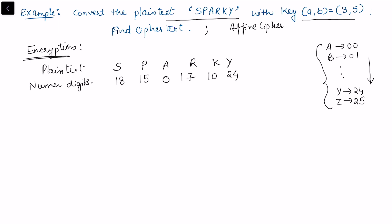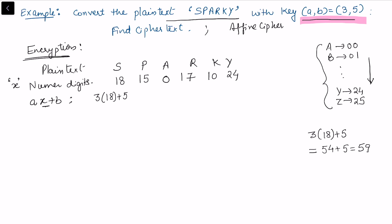We apply the affine cipher with key (3, 5), so the formula is c ≡ 3x + 5 mod 26. For the first letter S (x=18): 3×18 + 5 = 54 + 5 = 59. Then 59 mod 26: since 26×2 = 52, we get 59 − 52 = 7, so 59 ≡ 7 mod 26.